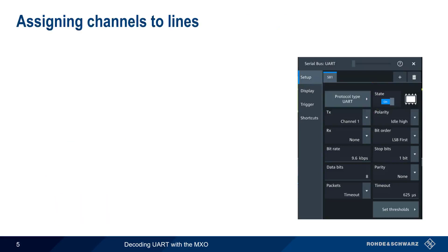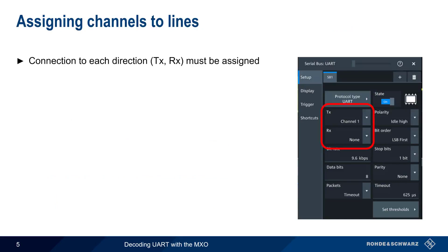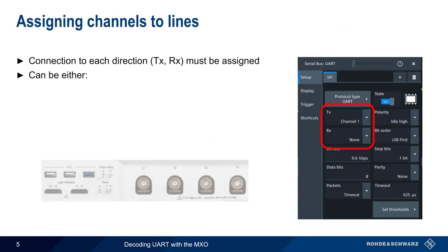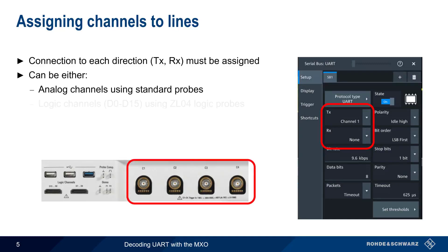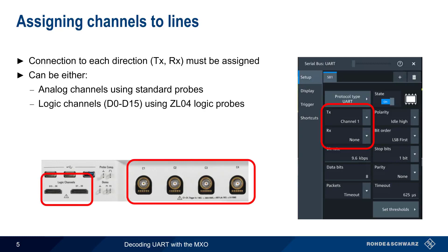The next step is defining the connection to the TX or RX wires. These connections can be made either using the analog channel inputs and standard passive probes, or by using the logic channel connectors attached to logic probes. In this presentation, we'll be using analog channels, but configuration and analysis are done more or less identically for both types of inputs.